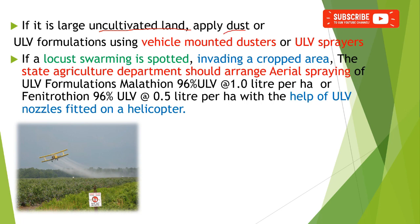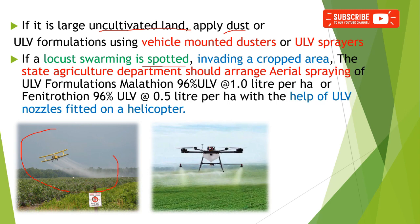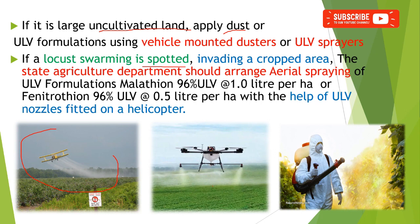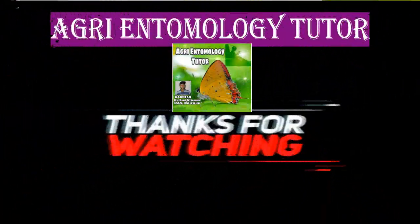If the locust swarm takes place in a large uncultivated land, apply dust formulation or ultra low volume formulation using vehicle-mounted dusters or ULV sprayers. If locusts are spotted invading a large cropped area, the state agriculture department should arrange aerial spraying of ultra low volume formulations like Malathion or Fenitrothion, using ultra low volume nozzles fitted onto helicopters or by using drones. Care must be taken while applying these pesticides.